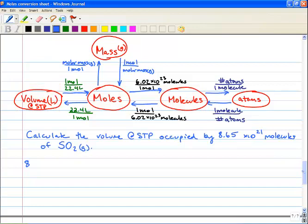So we've got 8.65 times 10 to the 21 molecules. And we're going to get it into moles. So if we look at our arrow there, we're going to put moles on top. And we've got 6.02 times 10 to the 23 molecules on the bottom. And we're going to cancel those out.